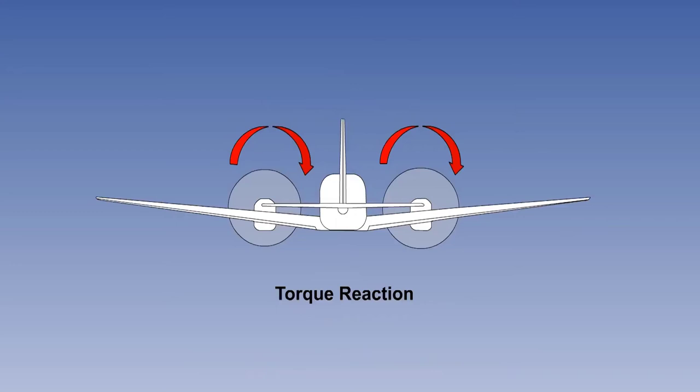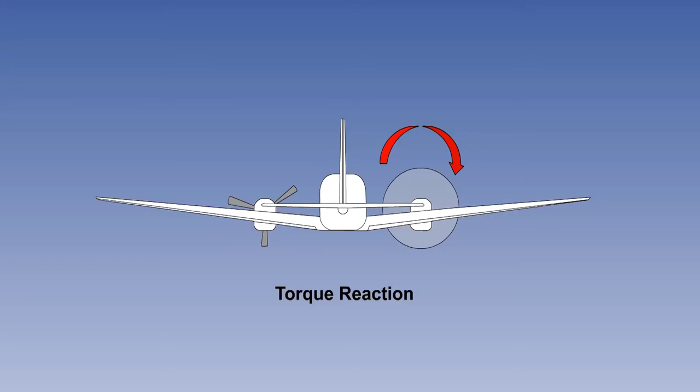When the engine turns the propeller, the equal and opposite reaction tries to turn the engine the other way, the torque effect being to roll the aircraft to the left. If the left engine were to fail, it would result in a bigger rolling moment to the left. As with asymmetric blade effect, this happens only with co-rotating propellers. Note, however, that if the propeller is windmilling, the torque is reversed, but is much less than the torque of the live engine.